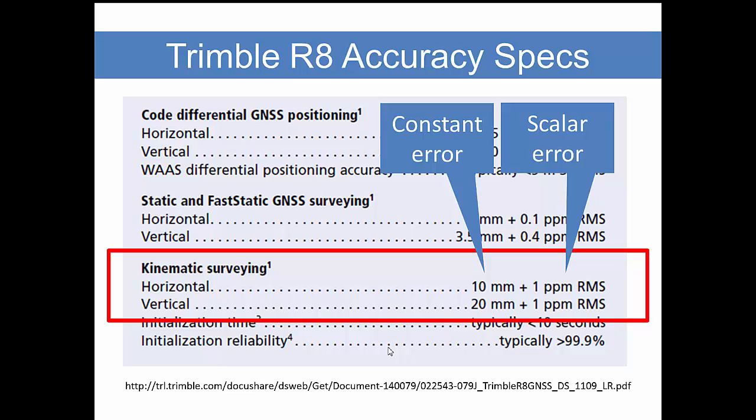Here's an example of how we express that growing error, and this is excerpted from the Trimble RA accuracy specs available online. For kinematic surveying, the horizontal accuracy is expressed with a constant error and a scalar error. RMS stands for root mean square. This is the same type of error specification we see, the same format we see for electronic distance measuring instruments.